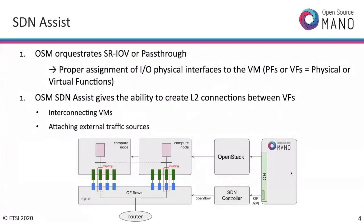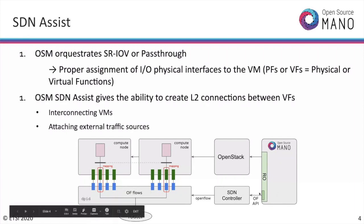Then you have SDN Assist. OSM, through RO, communicates to OpenStack and instantiates the virtual machines in the compute nodes, assigning the PCI addresses of the NIC — the virtual functions. What SDN Assist does is, through a plugin, communicate with an SDN controller which is external and may use OpenFlow or other mechanisms to communicate with the fabric. It will take care of the connectivity.